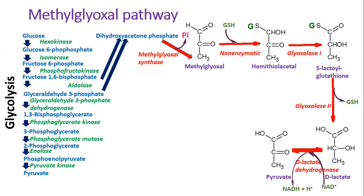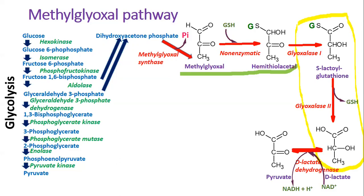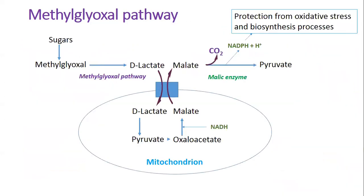Methylglyoxal formed from dihydroxyacetone phosphate binds free glutathione to form hemithioacetal. The reaction proceeds spontaneously. Hemithioacetal is successively transformed into S-lactoylglutathione and D-lactate by S-lactoylglutathione methylglyoxal lyase and S-2-hydroxyacylglutathione hydrolase. These two enzymes are also known as glyoxalase-1 and glyoxalase-2.